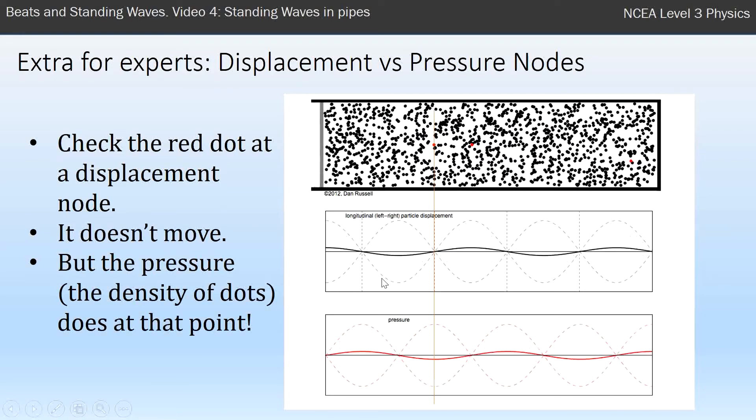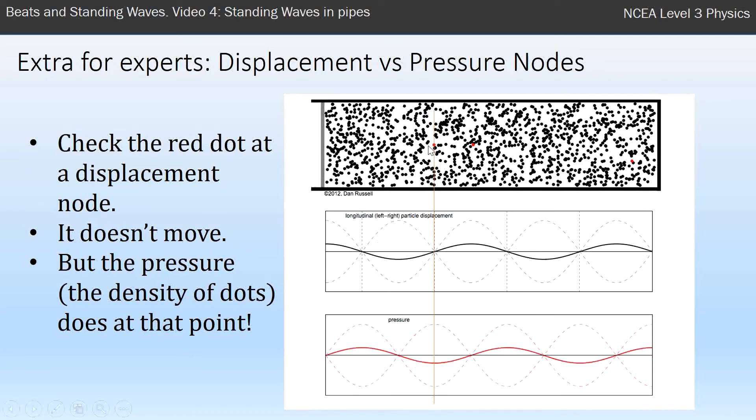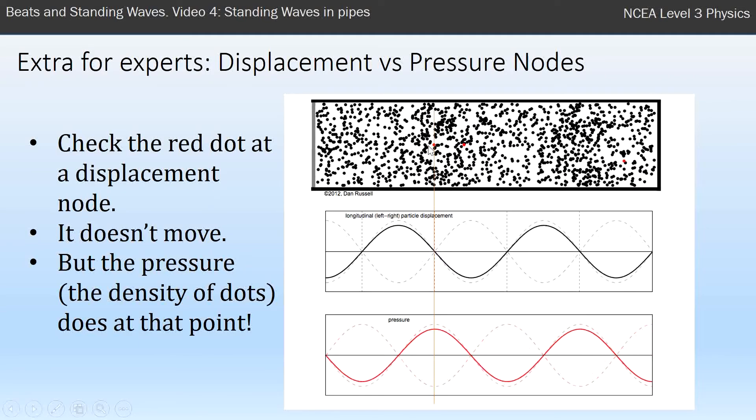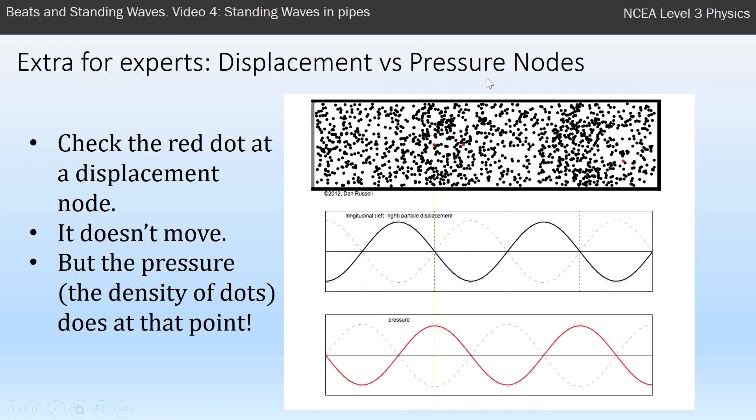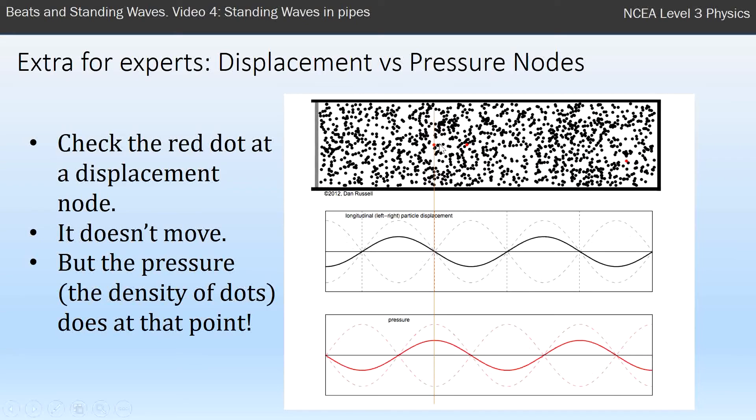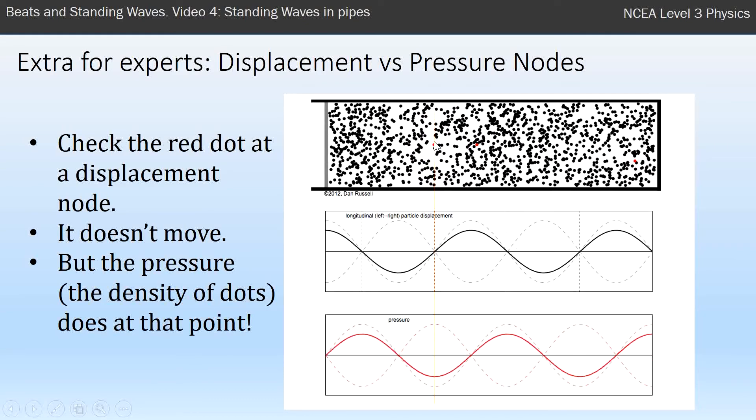But the pressure at that point changes a lot. What do I mean by pressure? Pressure is effectively the density of atoms. High pressure is lots of atoms squashed together, low pressure is atoms spread apart.